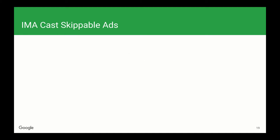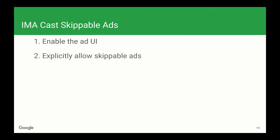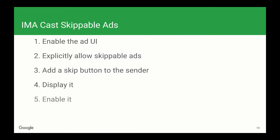To show skippable ads on Cast, we're going to follow six steps. But don't worry, each step is quick and simple. First, we'll enable the Ad UI on the receiver, then explicitly allow skippable ads, then add a skip button to the sender, display it, enable it, and skip the ad when the user taps on it.